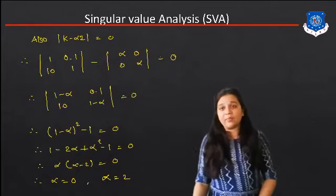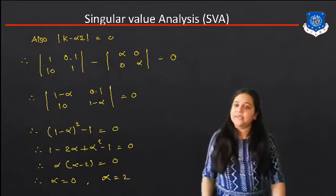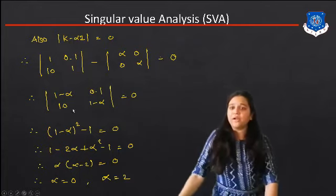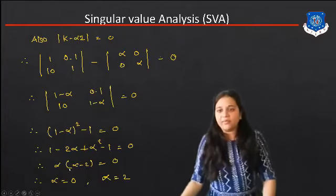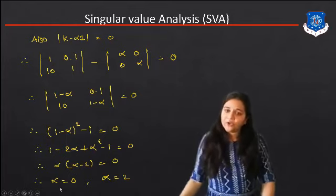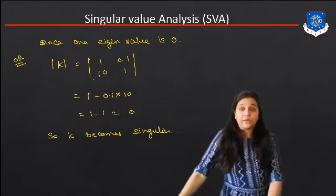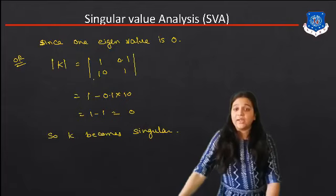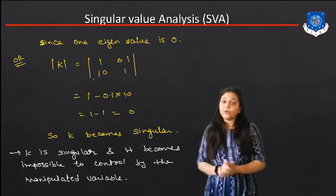Since RGA does not exist, we have to find the value using the SVA technique. Setting determinant of K minus Alpha I equal to zero, the matrix becomes [1 minus Alpha, 0.1; 10, 1 minus Alpha] equals zero. So (1 minus Alpha) squared minus 1 equals zero, giving 1 minus 2 Alpha plus Alpha squared minus 1 equals zero. Solving, Alpha equals zero and Alpha equals two. Since one eigenvalue is zero, K becomes singular, meaning it is impossible to control by the manipulated variable.